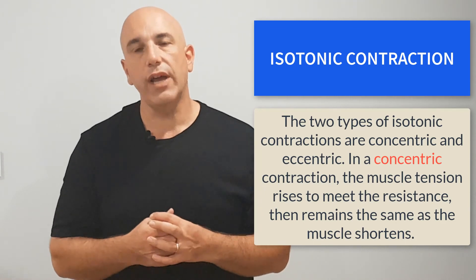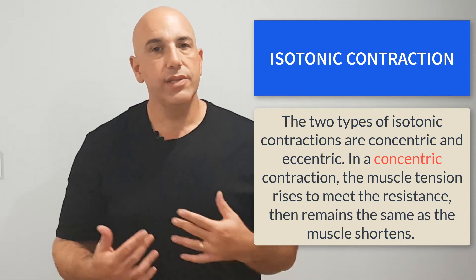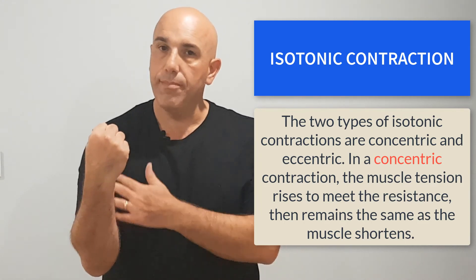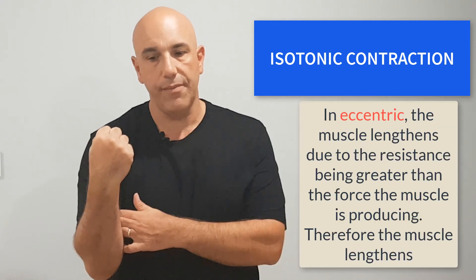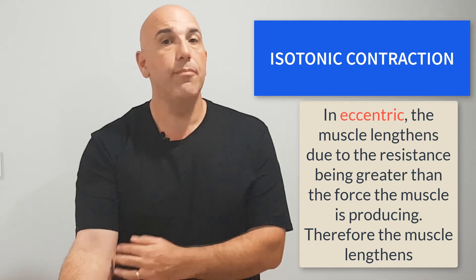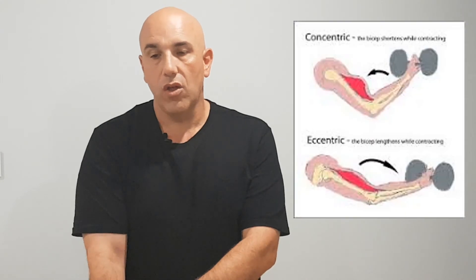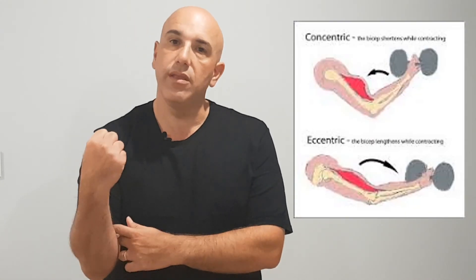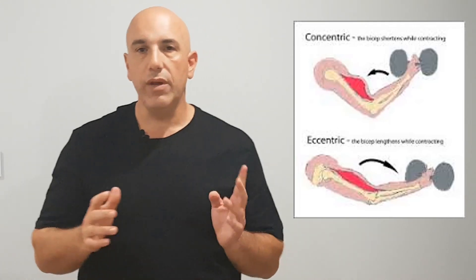Finally, let's look at muscle contractions. There are two main types, with one containing two subtypes. An isotonic contraction involves both concentric and eccentric contractions. A concentric contraction is when the muscle shortens — for example, curling the bicep up. An eccentric contraction is when the muscle contracts but lengthens — for example, extending the arm back down.